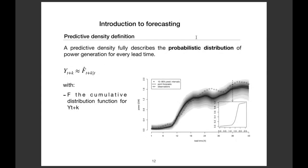We also have predictive density, which fully describes the probability distribution of power generation for every lead time. This technique tries to directly estimate the cumulative distribution function. If you know the CDF, you can sample every quantile you want. On the figure, different color levels represent several prediction intervals computed using the cumulative distribution function.